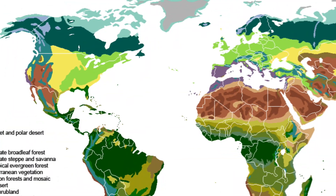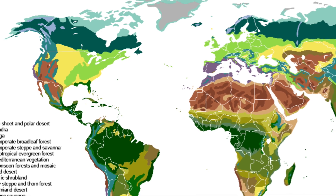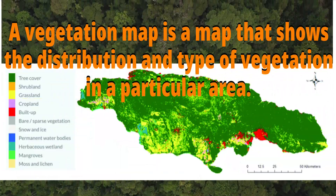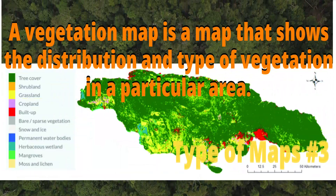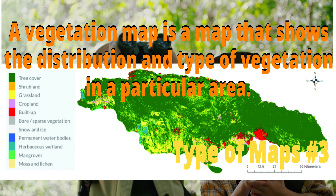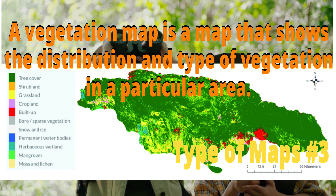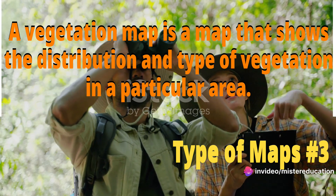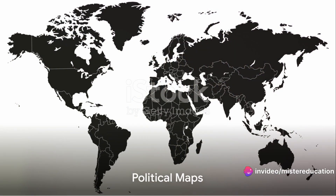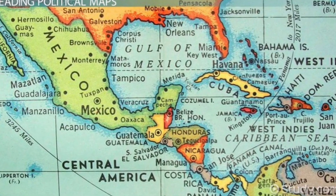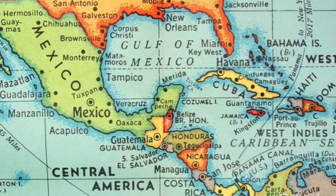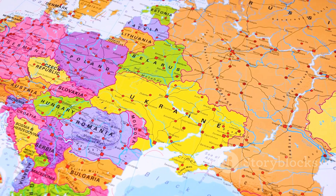Vegetation maps offer a glimpse into earth's green cover. They depict the distribution of different types of plants across the globe, from dense forests to sparse grasslands. They're vital tools for ecologists, helping them understand biodiversity and plan conservation efforts.